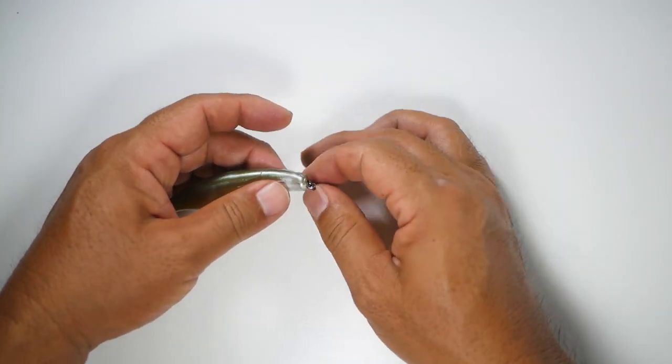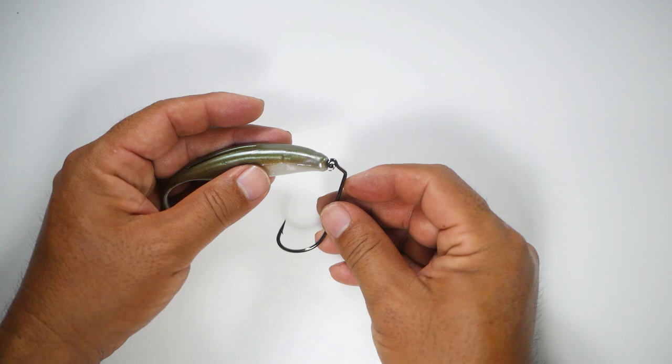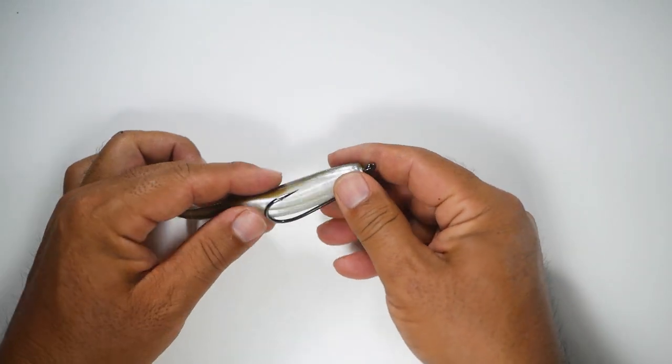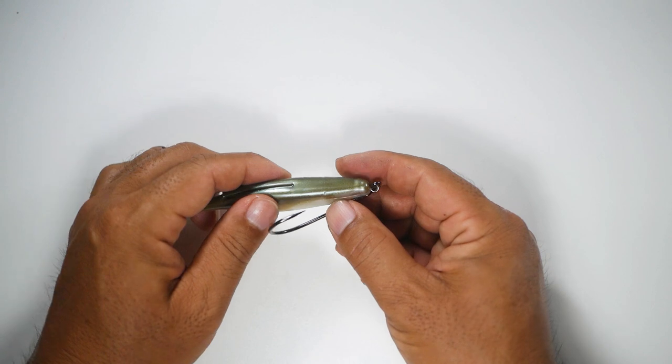Now once it's all the way attached, we're going to align the hook with our bait. So we're going to find the bottom side and then the top side.